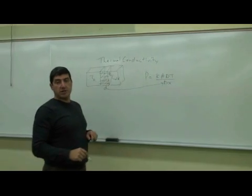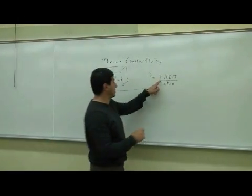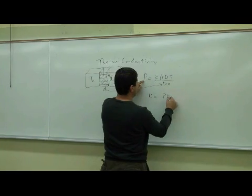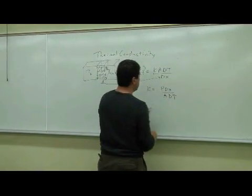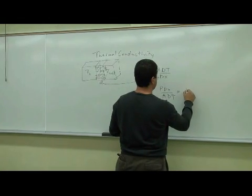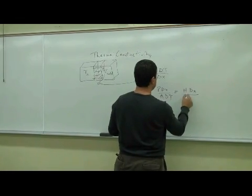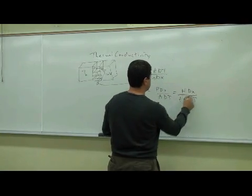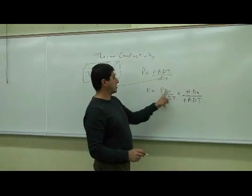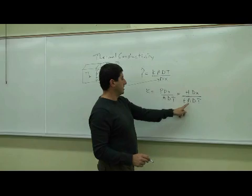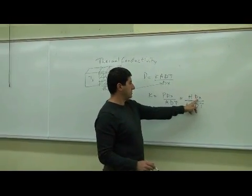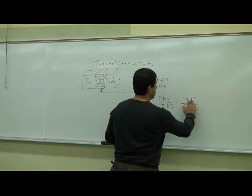So if I want to calculate the conductivity of a material, I go k = P times ∆X over area times ∆T. P is how much heat flowed per unit time. Power is how much heat flowed per unit time. A is surface area. This is change in temperature. This is the thickness, or I could just call it D.